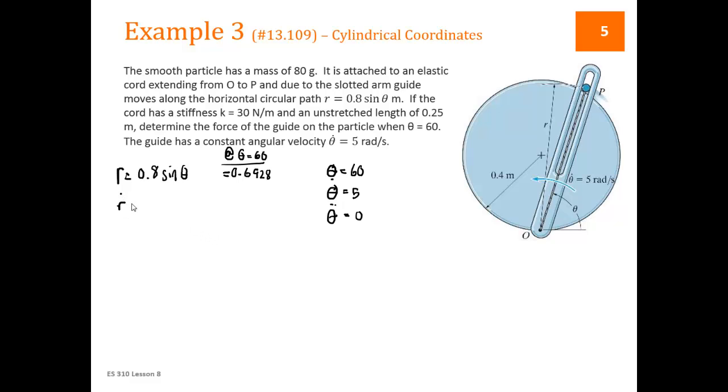r dot is the derivative then. So 0.8 is a constant, the derivative of the sine is the cosine of theta, and then the inner derivative, because theta is dependent on t as well, we get a theta dot. If we plug in theta equal to 60 and theta dot equal to 5 into this, we get 2.